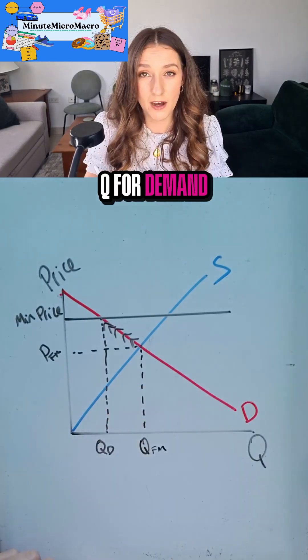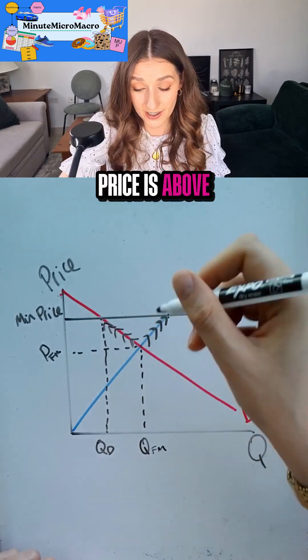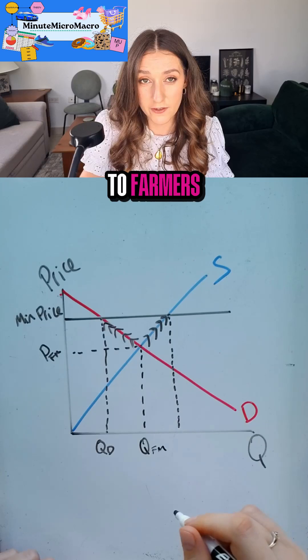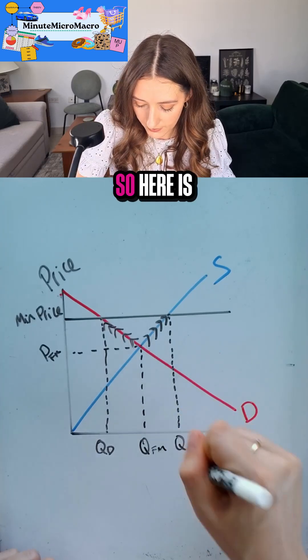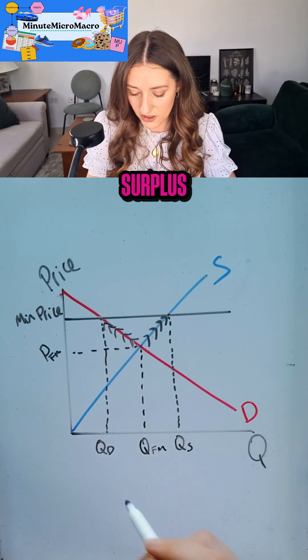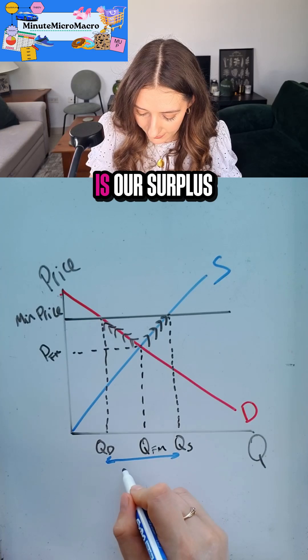I've got my Q for demand. There's going to be an extension in supply if the min price is above the equilibrium price. There's going to be more incentive to farmers to produce that quantity. So here is QS. And what we have created is a surplus. Our supply is greater than our demand. That gap there is our surplus.